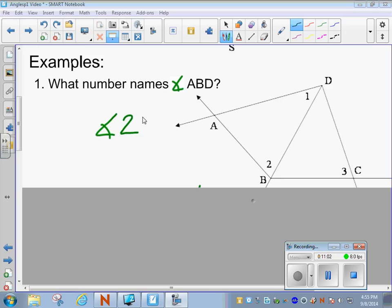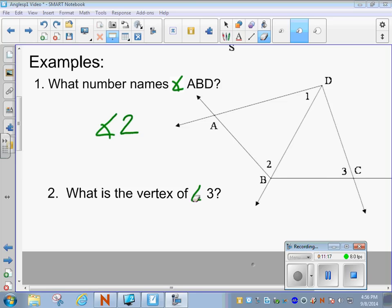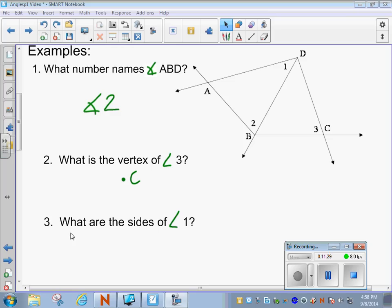As you can see, it says, what number names angle ABD? You can see it should be angle number two. How about this one? What is the vertex of angle three? So here we are at angle three. What letter would you identify as the vertex of that? Hopefully you would say C. And then finally, the third question for this drawing up here says, what are the sides of angle one? So here's one. I want you to talk about or write down what are the sides that represent angle one?